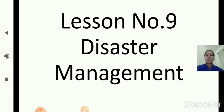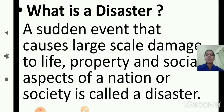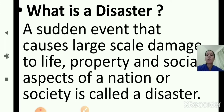So what is disaster? Disaster means a sudden event that causes large-scale damage to life, property and social aspects of a nation or society — that is called a disaster. There are two types of disasters: natural disaster and man-made disaster.